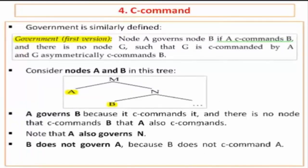You need to pay attention to definitions. Government: node A governs node B if A c-commands B, and there is no node G such that G is c-commanded by A and G asymmetrically c-commands B. Asymmetrically c-commands B — this is the main point.